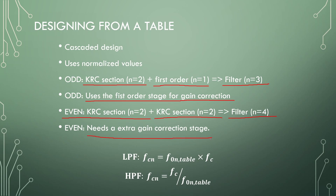We may require extra gain correction if we want a different final gain. For high pass filters, we divide by the value in the table — that is, taking the low pass filter values in the table and making them high pass filter values. Dividing by the table value just flips the response around.